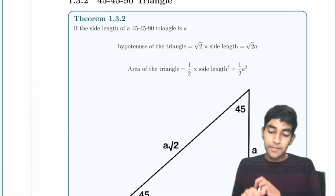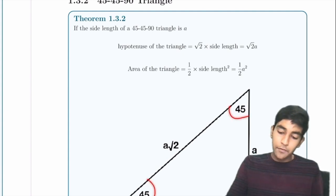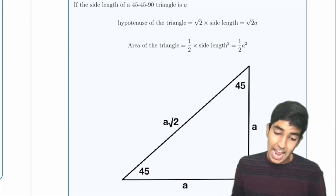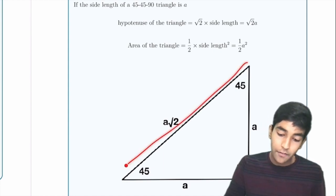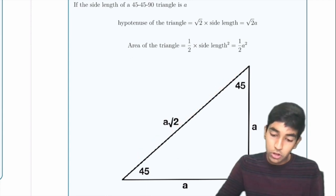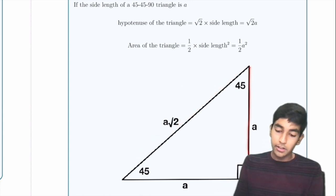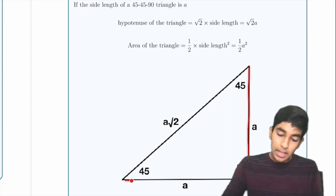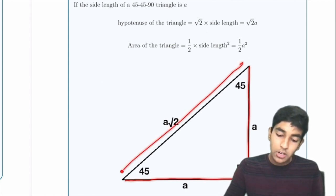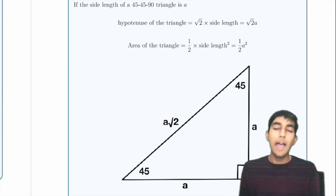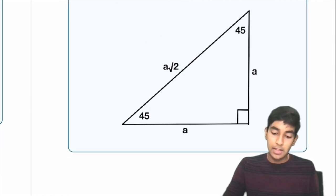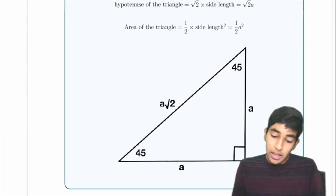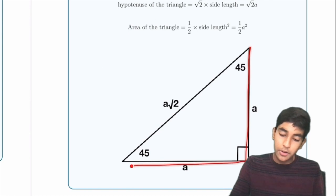For a 45-45-90 triangle, which is isosceles, if each leg has length A, the hypotenuse is √2 × A. The area is (1/2) × A × A. The side ratio is 1 : 1 : √2. Also, for isosceles triangles in general: if two sides are equal, the base angles are equal, and vice versa — one implies the other.